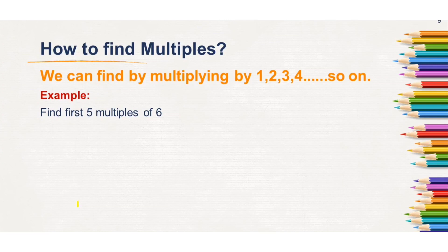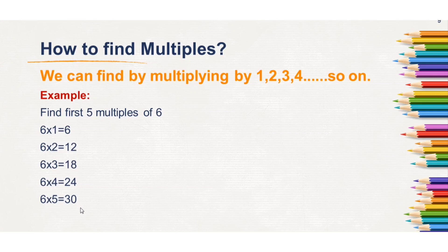How to find multiples? We can find them by multiplying by 1, 2, 3, 4 and so on. For example, find the first 5 multiples of 6. The first 5 multiples of 6 are 6, 12, 18, 24 and 30.